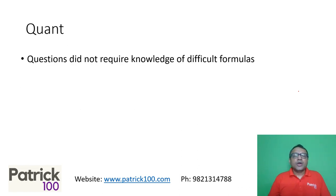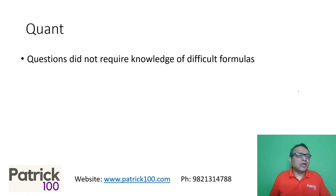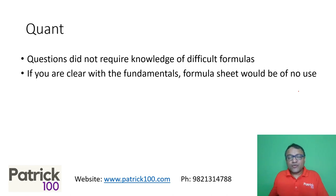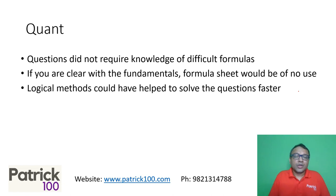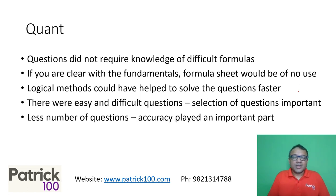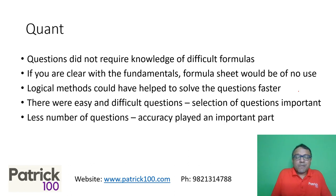Coming to the quant section — questions did not require knowledge of difficult formulas. A lot of people had their formula sheets, but if you look at the questions that came in the exam, they did not require any exotic formulas. Simple fundamentals, if you're clear with them, the formula sheet was of no use. In fact, a formula sheet could backfire — if you rely too much on formulas, you tend to look for them and that makes you slow. Logical methods definitely help and will help you solve questions faster. There were easy and difficult questions, so selection of questions became very important. You should be able to select simple questions and skip difficult ones that normally take time. With less number of questions, accuracy played an important role — go a few questions wrong and your marks could drop drastically.